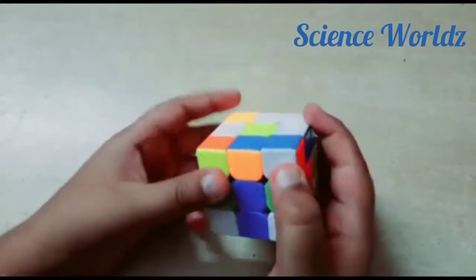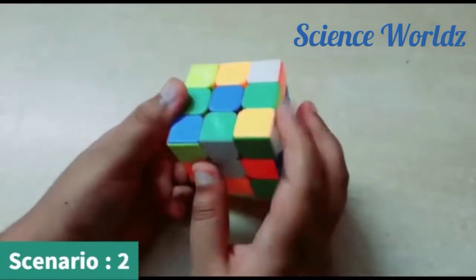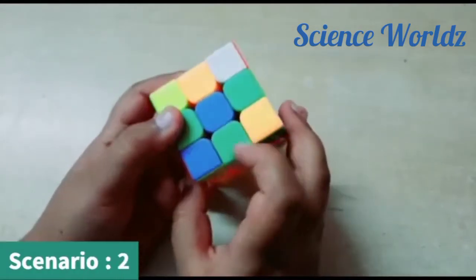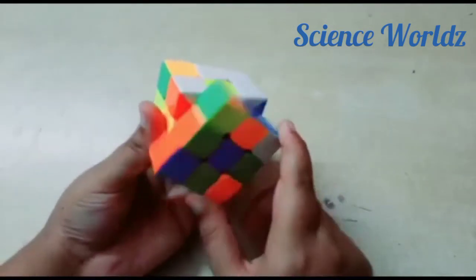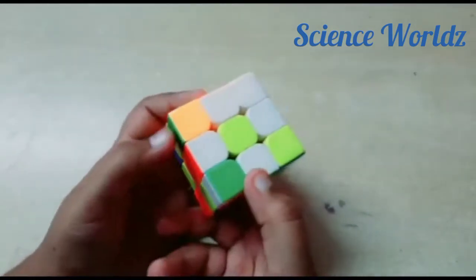This was our first scenario. For our second scenario, the piece is on the bottom layer but it is on the bottom. So, we must turn this slice two times so that it comes to the top.